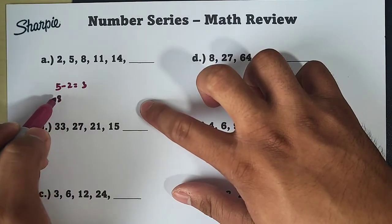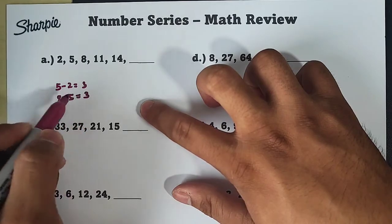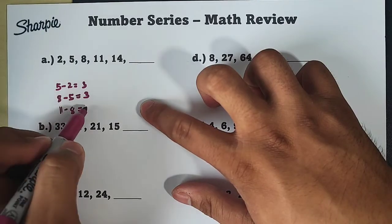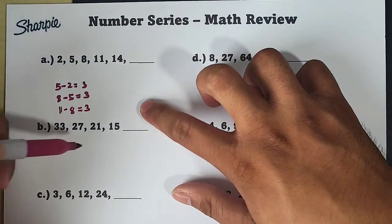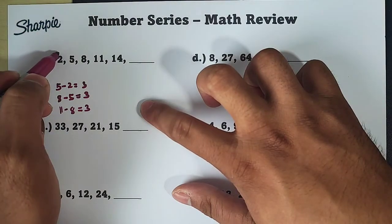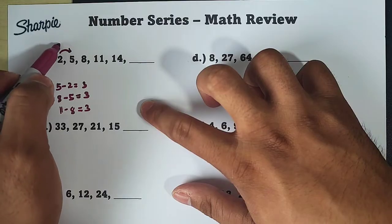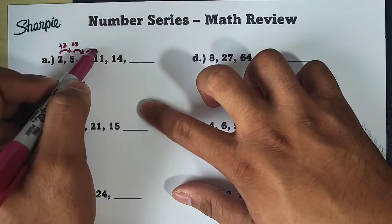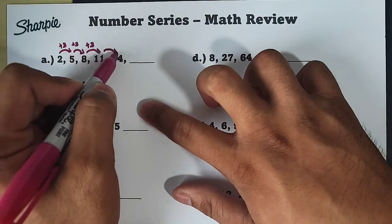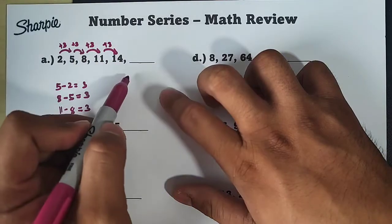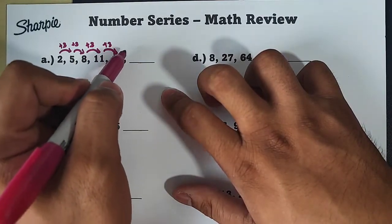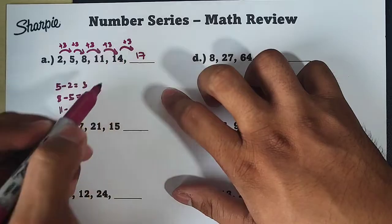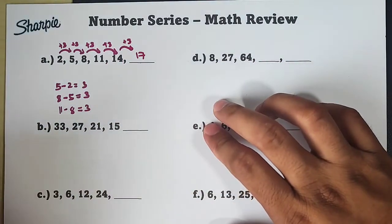Then, I have 8 minus 5 is also equal to 3, and 11 minus 8 is also equal to 3. And as you can see, repeated yung pattern natin. For you to get to the second term, you need to add 3. Now, to get the next term, all you need to do is to add 3 from 14, and the answer is simply 17. Ganon lang sya kasimply guys yung item number 1 natin.